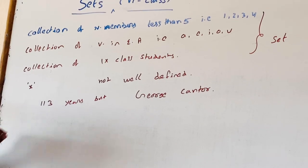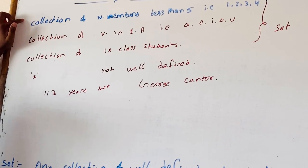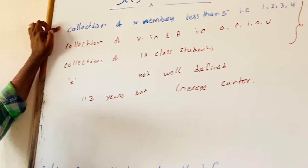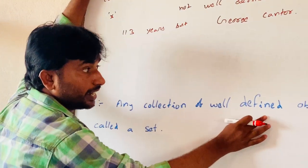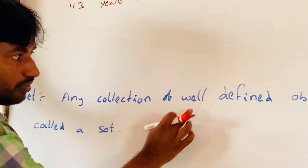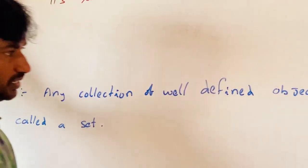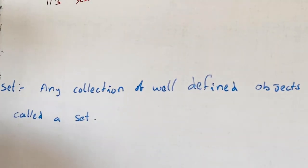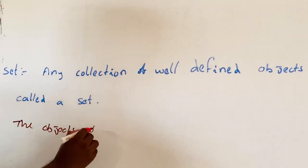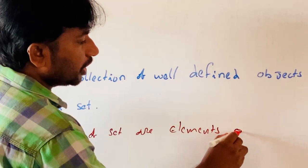Now, according to the examples, what is the perfect definition of a set? Any collection of well-defined objects is called a set. Here, well-defined means the given object either belongs to or does not belong to the given set. The objects of a set are called elements or members.